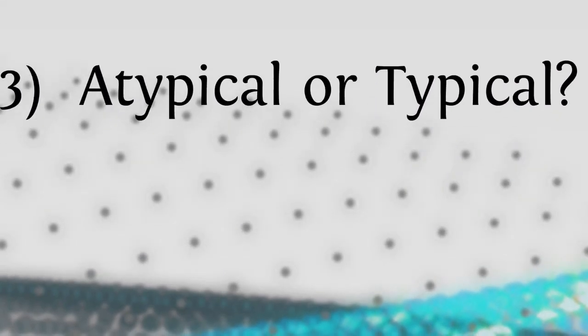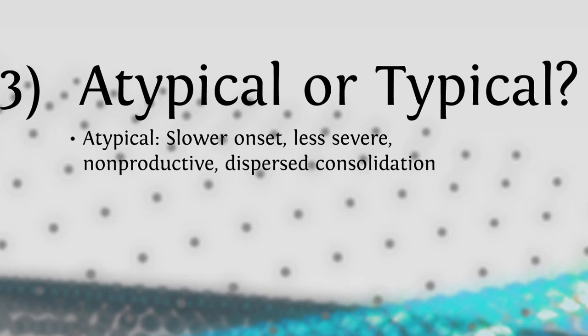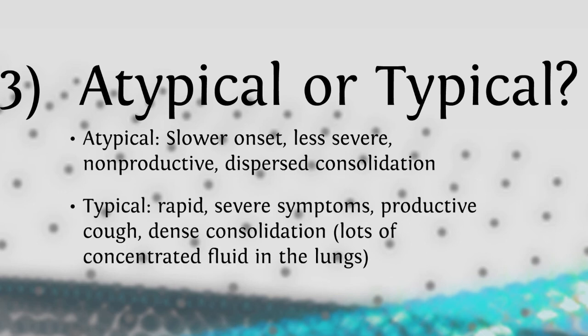Our last question, atypical or typical, refers to the quality of the pneumonia. If it's atypical, it had a slower onset, so it was chronic, it was less severe, it had a non-productive cough, and had dispersed consolidation. This consolidation refers to the distribution of fluid in the lungs. Is it concentrated to a specific lobe or region, or is it atypical and the fluid is spread out throughout the lungs? In contrast, we have typical pneumonia, where it was rapid, had severe symptoms, productive cough, and dense consolidation. So there's lots of fluid in a specific branch or lobe of the lung.